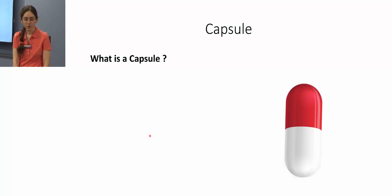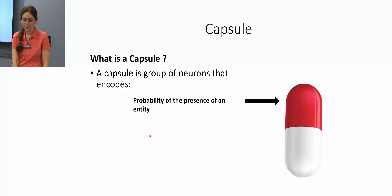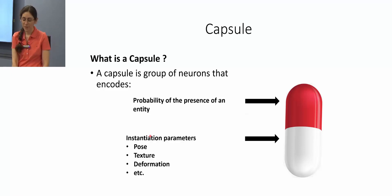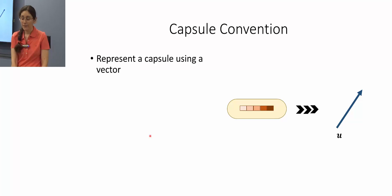As a solution to this problem, Hinton proposed the idea of a capsule. A capsule is a group of neurons that encodes the probability of presence of an entity and also instantiation parameters like pose, texture, and deformation of that entity. While there are different ways to represent a capsule, here we represent it as a vector following the convention of the original capsule network paper.